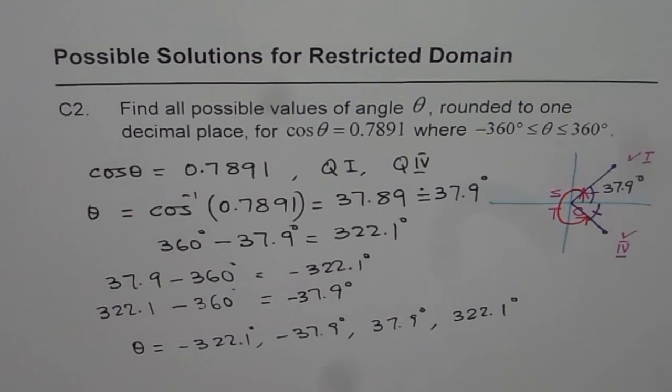So first find all your solutions for 0 to 360 and then see by adding or subtracting multiples of 360, all other possible solutions within the given domain as we did here. I hope that helps. Thank you and all the best.